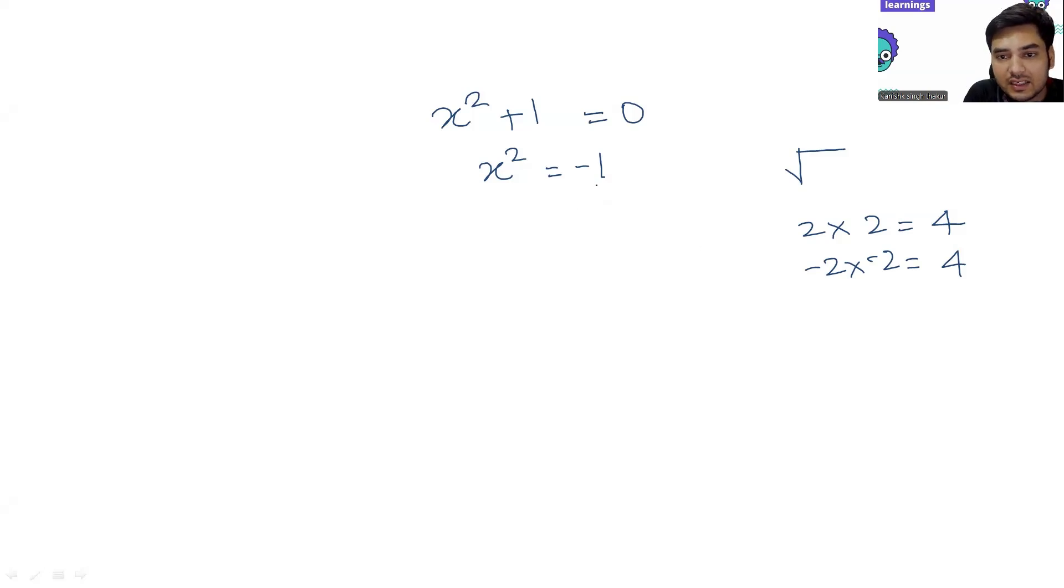Now we had to represent in math since we are getting them. So we started representing with a symbol called iota. And this x, you get it as under root of negative one. Under root of negative one, you started calling it as iota. Iota is nothing but under root of negative one. So remember, what is iota? Iota is under root of negative one. This iota is imaginary numbers.